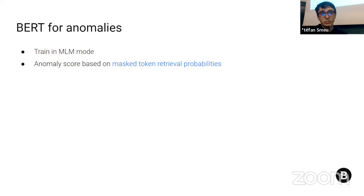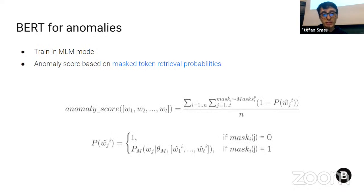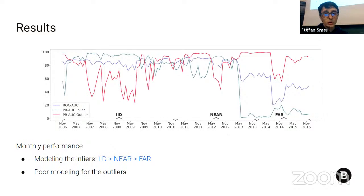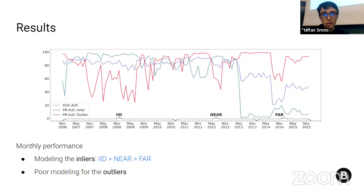We also use BERT for anomalies, trained in masked language modeling mode. At inference time, tokens are randomly masked, unmasked tokens serve as context, and the anomaly score is computed based on the probability of the original tokens given by the model. We evaluate this model at the month level of granularity, and observe that precision-recall AUC slowly decreases during the IID and near splits, then drops suddenly just before the far split. We also notice very poor modeling of the outlier class, which has a much more chaotic evolution in time.